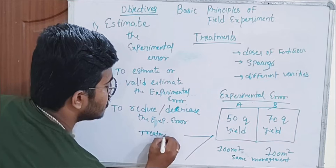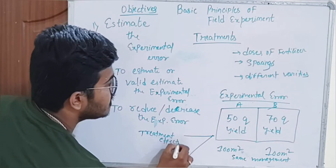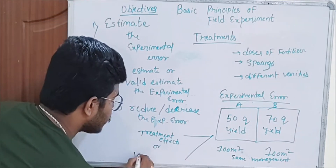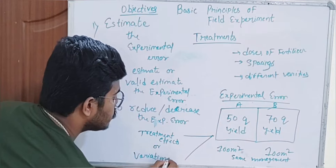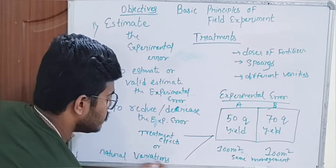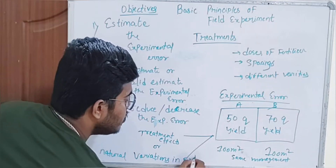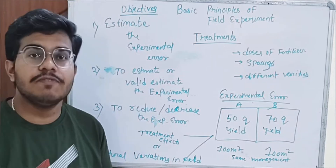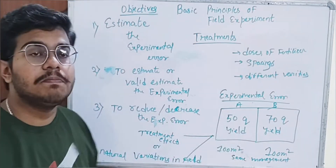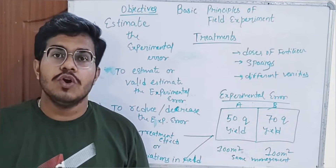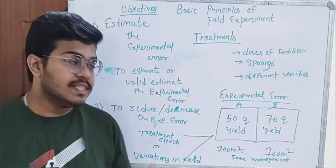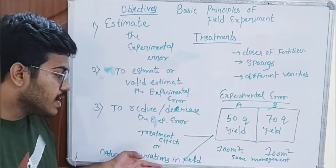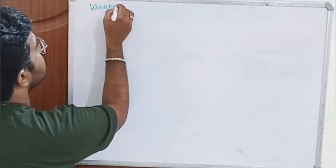So what we consider is the effect of the treatments taken for the experiment, but the difference may also be due to natural variations in the field. It cannot be concluded that treatment effects alone give different yields — there may be some natural variations which may or may not be within our control.